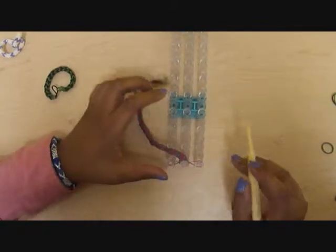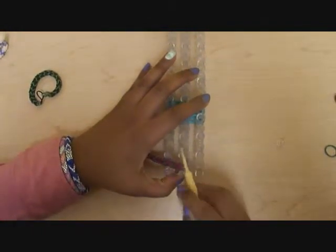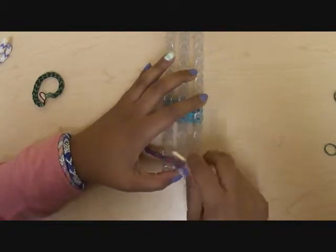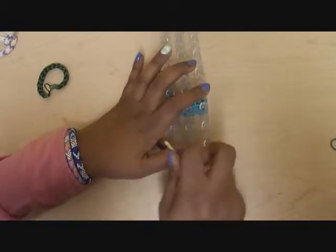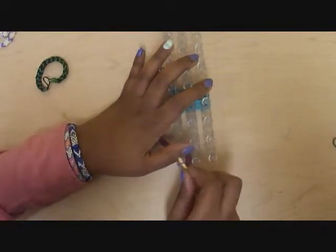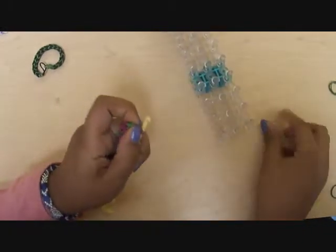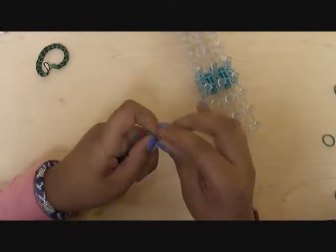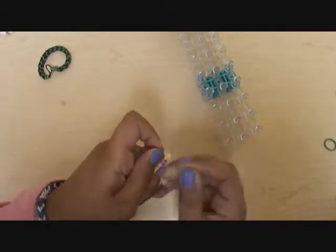So once you have your bracelet at the desired length, you're going to take all three bands and put them onto your hook, and you're just going to pull it and C-clip them all in.